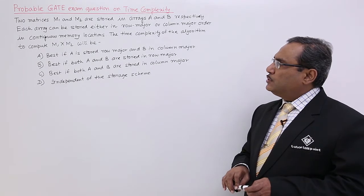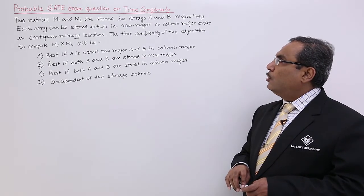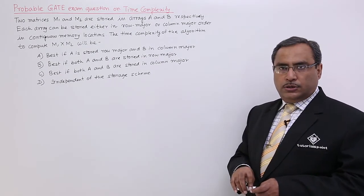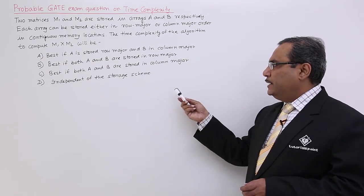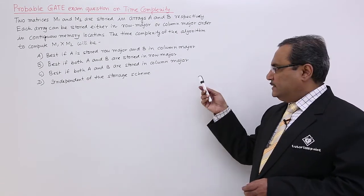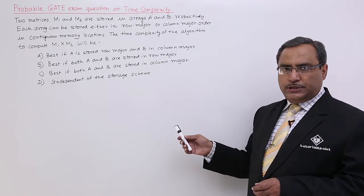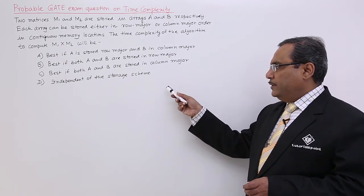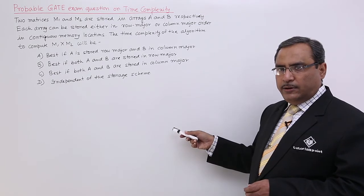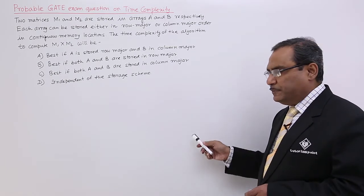Each array can be stored either in row major or column major order. Row major means the array content will be read row-wise and sequentially they will be kept in the computer's memory. In case of column major, the array content will be read column-wise and they will be kept sequentially in the computer's memory accordingly.